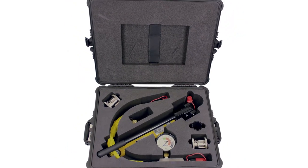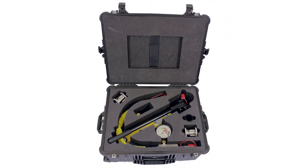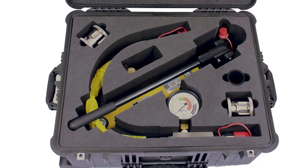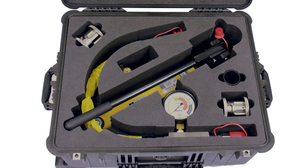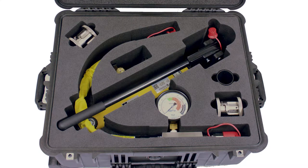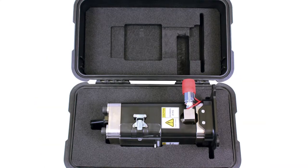The Reflex Press is delivered in two cases. The first case shown here is the hydraulic accessories case and contains the hydraulic pump, hydraulic hose with pressure gauge, as well as two sample dies, funnel, cleaning kit, and measuring spoons.